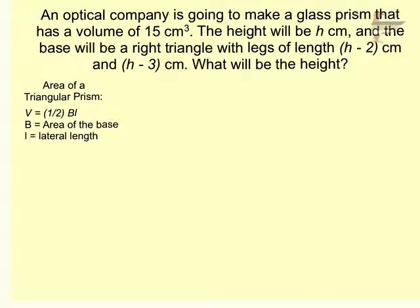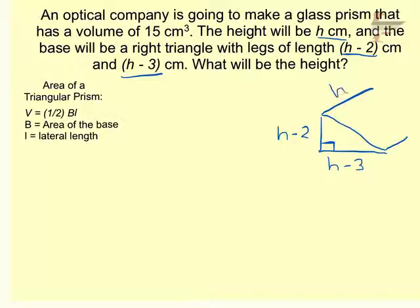Okay, the last video is talking about an optical company. They're going to make a glass prism that has a volume of 15 cubic centimeters. The height should be h centimeters, and the base will be a right triangle with leg lengths of h minus 2 and h minus 3 centimeters. What will the height be? Well, we know we have a triangular prism, specifically a right triangle. I'm kind of a lousy three-dimensional drawer, so I'll just kind of sketch in a right triangle here. And we know that the legs are h minus 2 and h minus 3. And then, of course, if you envision this prism, you know that that height is going to be h. Make sure that picture kind of makes sense. Envision that that's in three dimensions.